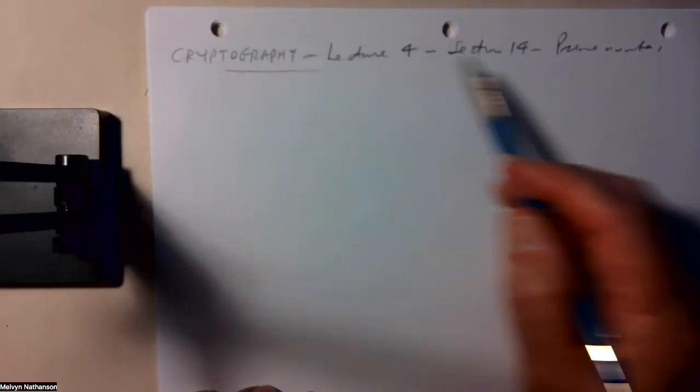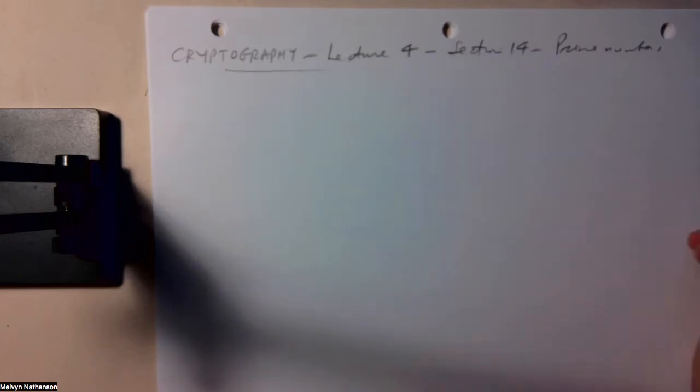This is lecture four. We're covering section 1.4, which is about prime numbers, unique factorization and finite fields.